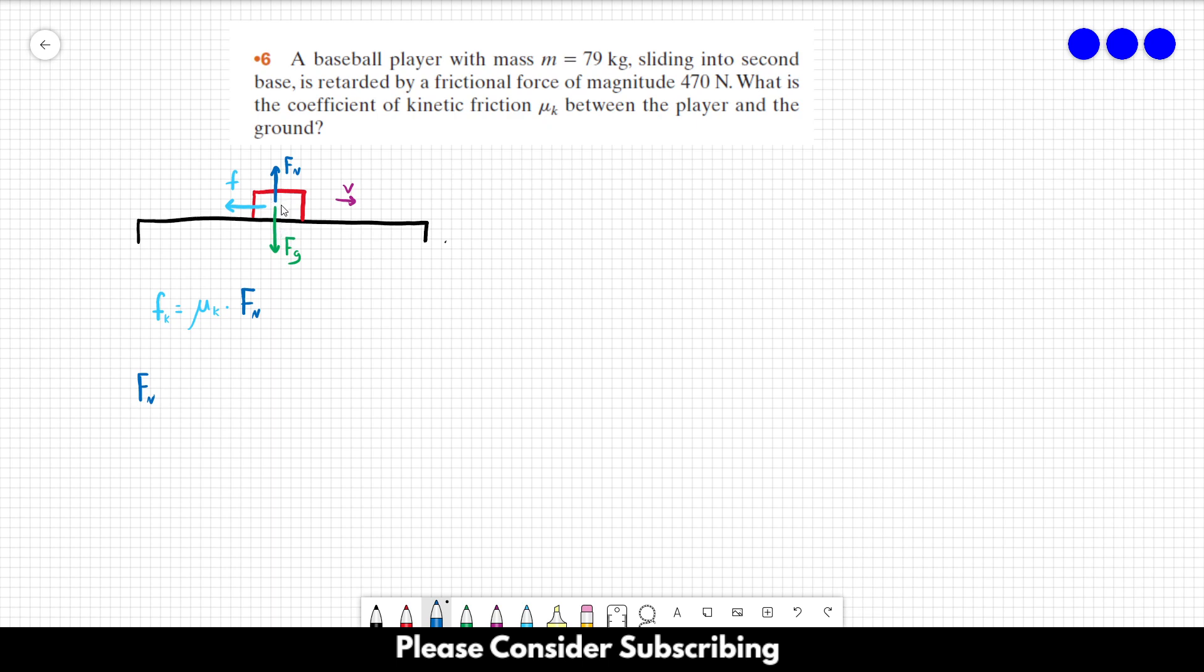And we also know that the normal force over here, since there aren't any other vertical forces, only the gravitational force and the normal force, so the normal force and the gravitational force must cancel out. So the absolute value of the normal force is equal to the gravitational force, which is equal to mass times gravity.